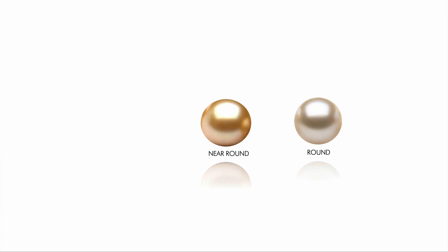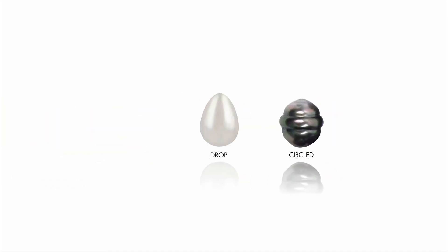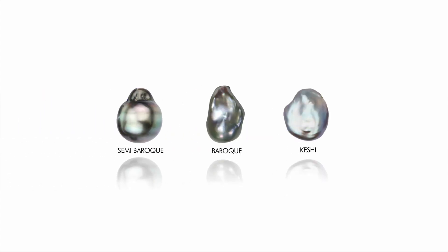Pearls come in a variety of different shapes: button, near round and round. Button pearls are slightly flat on one side, making them perfect for stud earrings or as applications. Oval, drop and circle. Circle pearls have one or more grooves or circles around them. Semi-baroque, baroque, and keshi. Semi-baroque pearls have irregular, non-spherical shapes, but less irregular than baroque pearls. Baroque pearls have irregular, non-spherical shapes. Keshi are pearls that have been rejected by the oyster before the development of the pearl is complete; they are 100% nacre and come in a variety of shapes and colors.